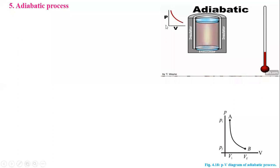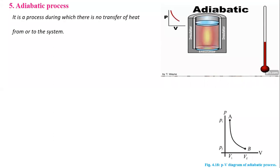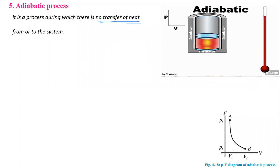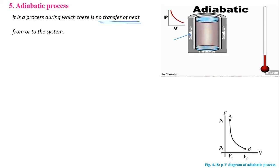The fifth thermodynamic process is the adiabatic process. An adiabatic process is one during which there is no transfer of heat from or to the system. The cylinder is enclosed by insulating surrounding material — this is the insulator — so when we heat such a gas, energy is not transferred in or out.